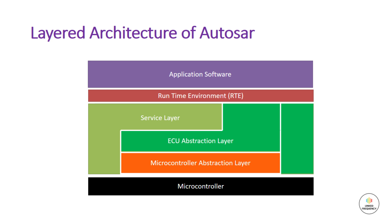The BSW layer is divided into the service layer, the ECU abstraction layer, and the microcontroller abstraction layer. MCAL stands for microcontroller abstraction layer. It is a software layer in the AutoSAR architecture that provides an abstraction layer between the hardware and the rest of the software components in the system. It makes higher software layers independent of the microcontroller. The purpose of MCAL is to provide a standardized interface for the hardware peripherals of the microcontroller, such as ADC, PWM, and timers. This makes it easier to develop and maintain embedded software in the automotive industry.